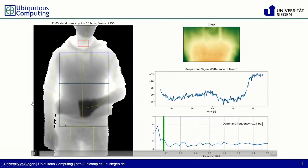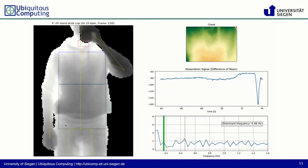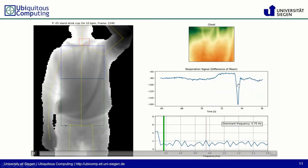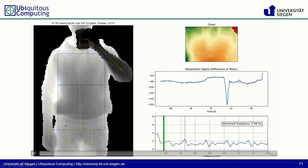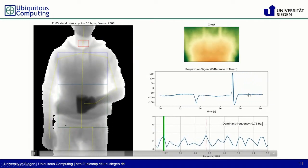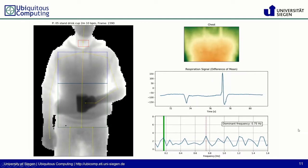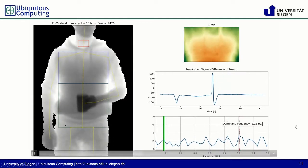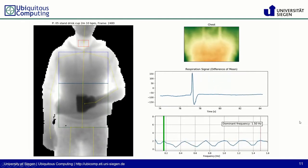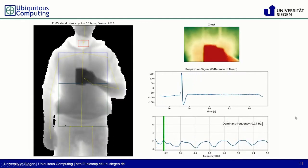Why is this user drinking now? The self-occlusions cause large spikes in the signal and in the frequency domain we cannot see the respiratory rate anymore at all.